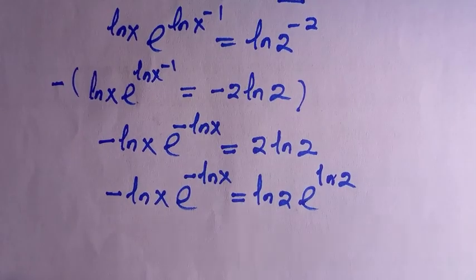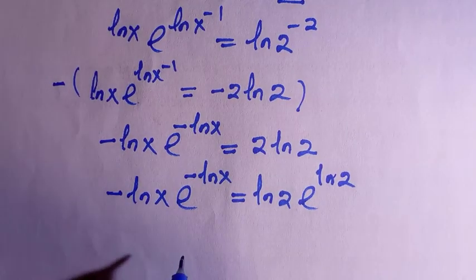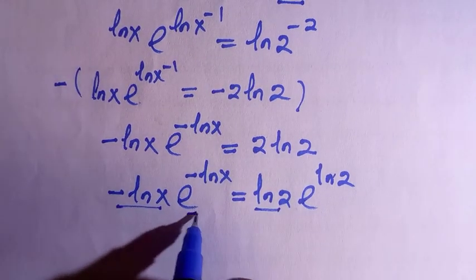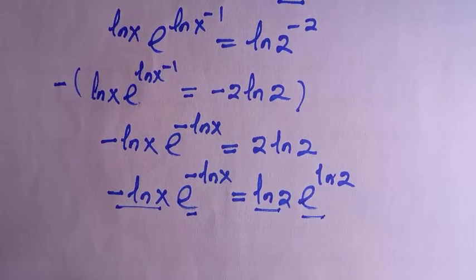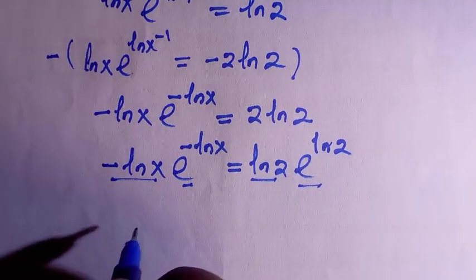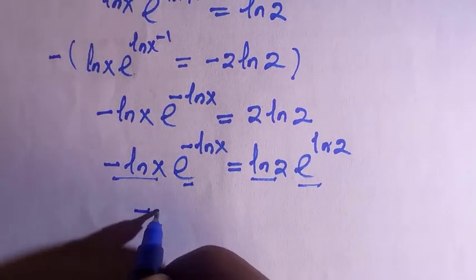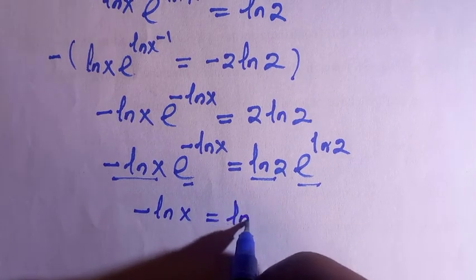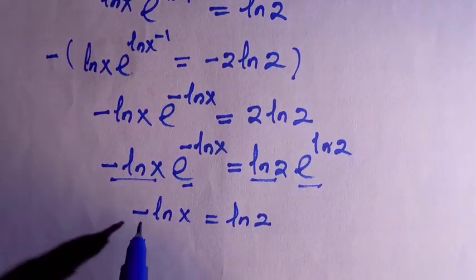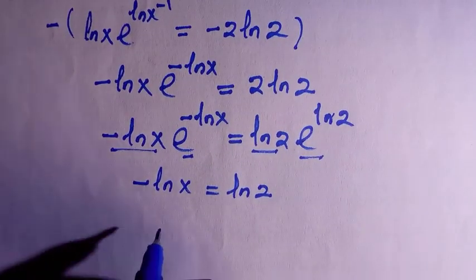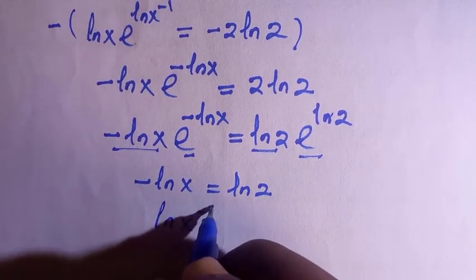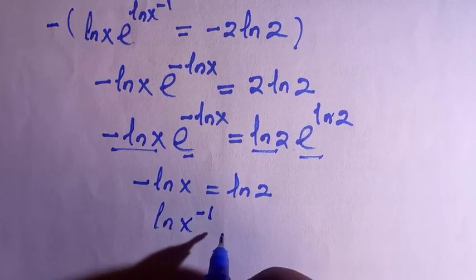Now these terms look the same — the power of exponential and the coefficient match. If I write ln 2 and introduce exponential of ln 2, then ln and exponential cancel and it remains 2. So let's do the comparison: comparing the exponential side and the ln side.